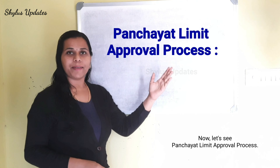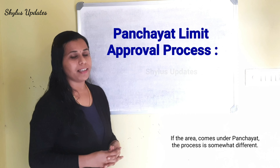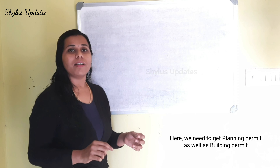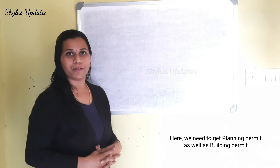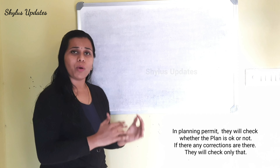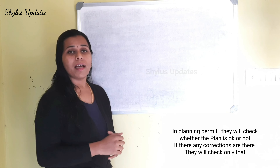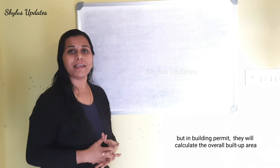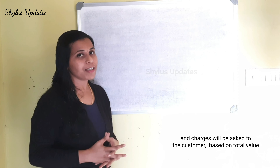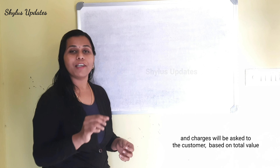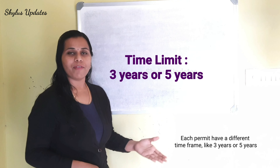Now let's see about the panchayat limit approval process. If the area comes under panchayat, the process is somewhat different. Here, we need to get both a planning permit as well as a building permit. In the planning permit, they will check whether the plan is acceptable. In the building permit, they will calculate the overall built-up area, and charges will be asked based on the total value. Each permit has a different time frame, like 3 years or 5 years.